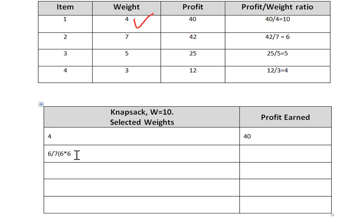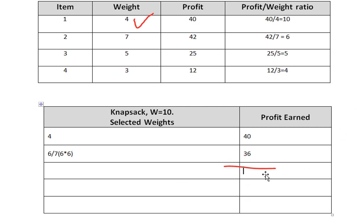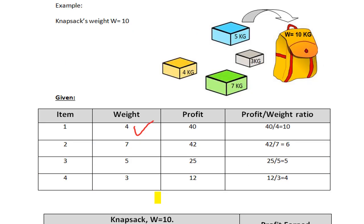The profit for the 6/7 portion is 6 multiplied by 6, giving 36. After inserting weight 4 and then 6 kg of item 2, the bag is full. Total profit earned is 40 plus 36, which equals 76.